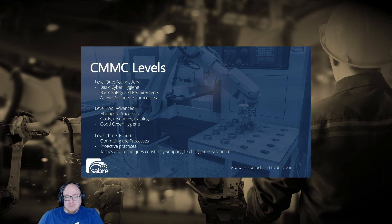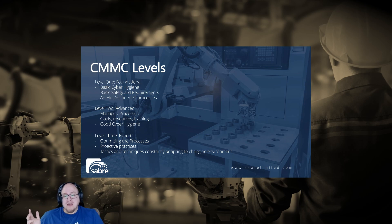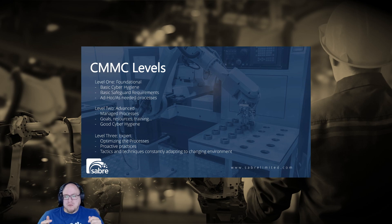Lastly, we have Level 3, or Expert. Processes are optimizing — the CMMC compliance process implementation is standardized across the organization with ongoing corrective action improvements. Practices are advanced and proactive. This includes a subset of 800-172 requirements. Cybersecurity practices are in place to detect and respond to threats with a focus on protecting CUI from APTs. Tactics and techniques are modified to adapt to changing APTs. The depth and sophistication of cybersecurity measures are increased.